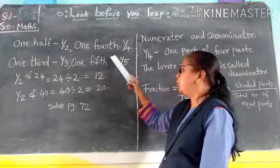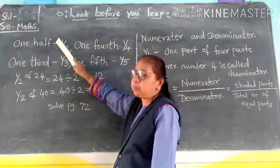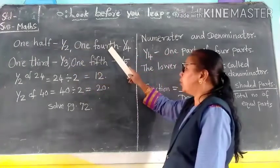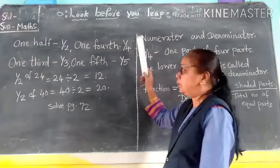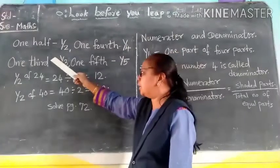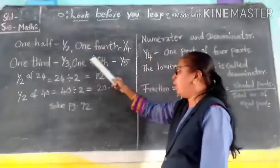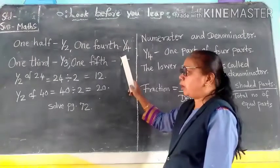One half means in two parts, one part is taken. One fourth means in four total parts, one part is taken. One third means out of three parts you are taking one part, and one fifth means from five total parts, one part is taken.